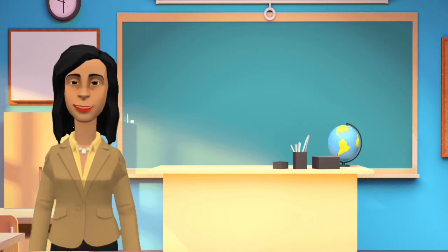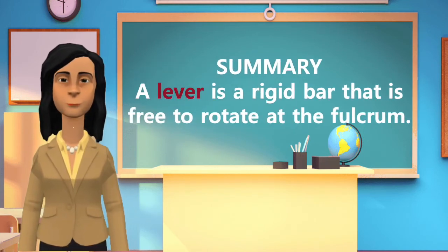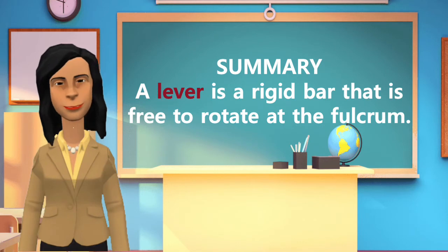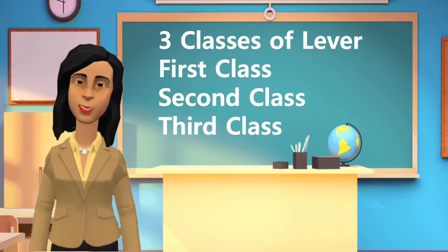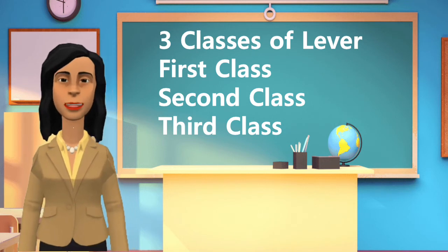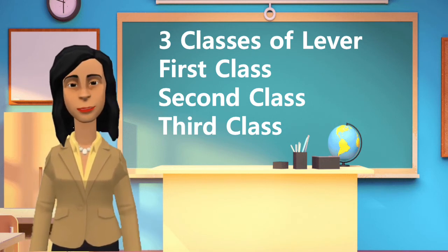A lever is a rigid bar that is free to rotate at the fulcrum. A lever has three classes based on the position of effort and fulcrum: first class, second class, and third class.